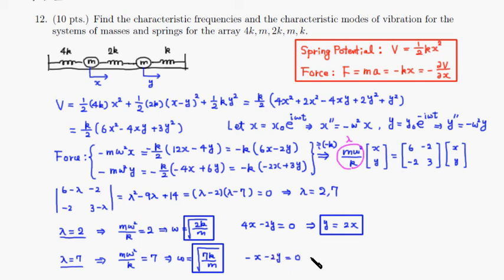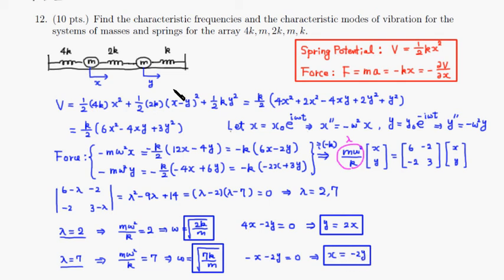This gives x = −2y. The negative sign means the two displacements are in opposite directions, and the magnitude of x is twice as large as y — the first mass moves twice as much as the second mass in the opposite direction. That's how you do problem number 12.